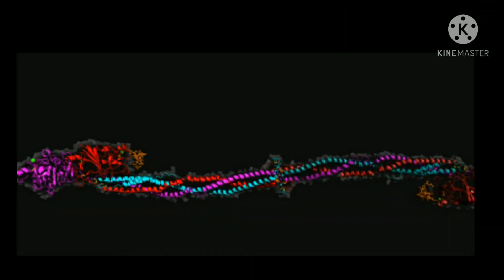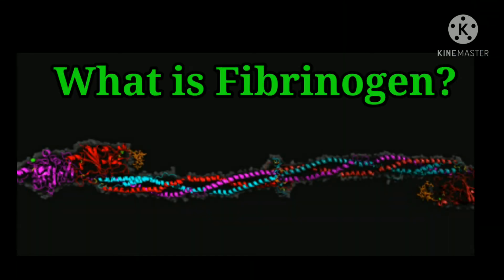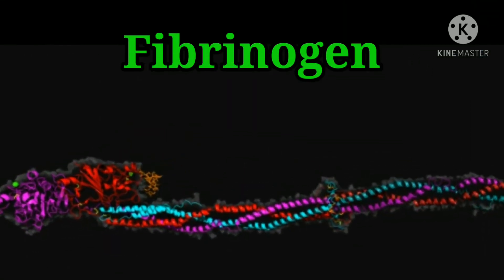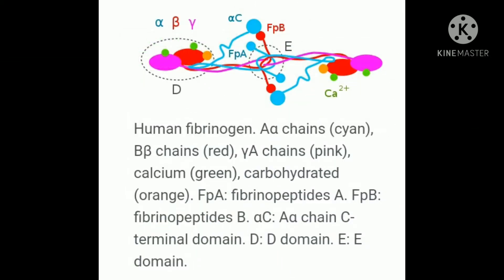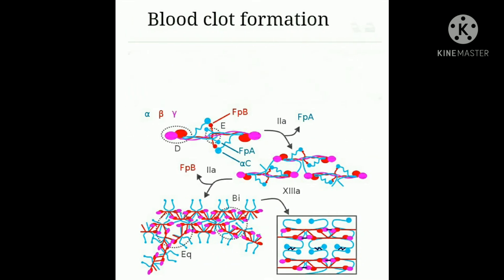Next, we will see what is fibrinogen. Fibrinogen is a soluble protein made in the liver that circulates in the blood of all vertebrates. When blood clotting is activated, fibrinogen is converted to fibrin, which in turn helps to form a blood clot.